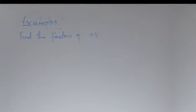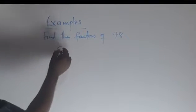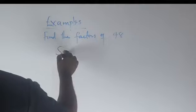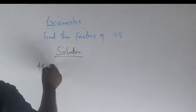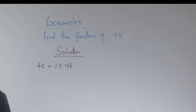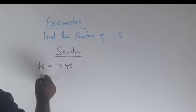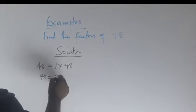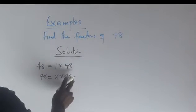Let's look at this example: find the factors of 48. The question is asking us to find all the numbers that can divide 48 without a remainder. So, 1 can divide 48 — that means 1 multiplied by 48. Then 2 can divide 48, giving us 2 multiplied by 24.